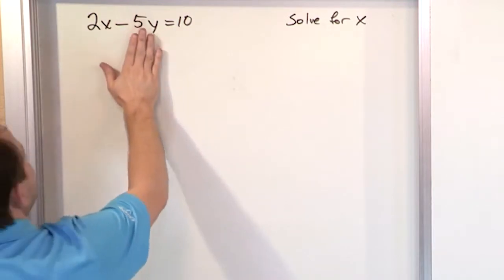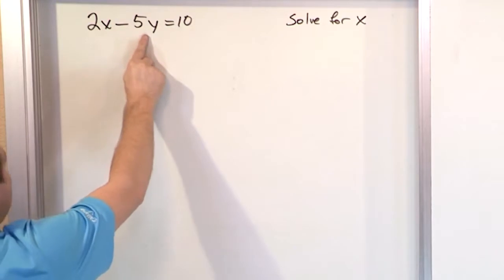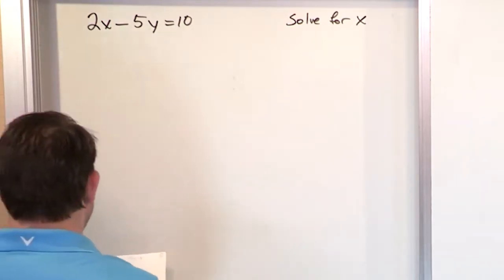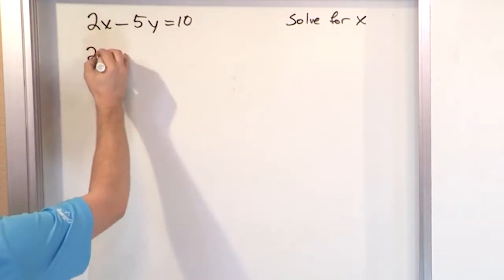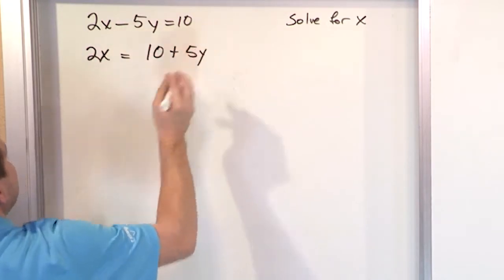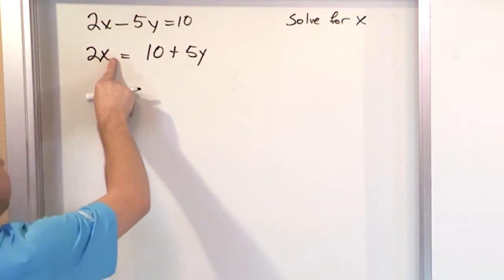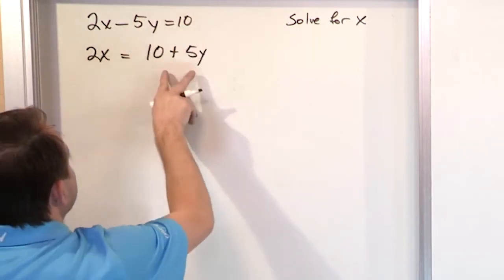So the first thing we have to do is get rid of the 5y. How do we do it? We just add 5y because that will cancel it on the left. So what we're going to have then is 2x will be the only thing on the left, but on the right we'll have the 10 and we'll be adding 5y to it. So we do the same thing to both sides. We add 5y on the left, making it 0. We add 5y on the right, giving me this.